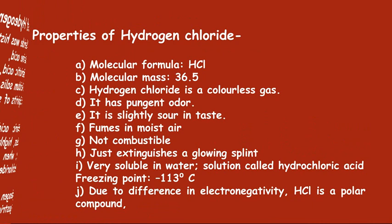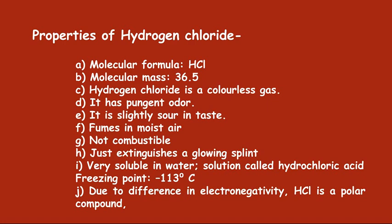Now we are moving forward to the properties of hydrogen chloride. The molecular formula of hydrogen chloride is HCl — that is, one atom of hydrogen and one atom of chlorine combine to form hydrogen chloride. The molecular mass of HCl is 36.5, so we can predict the vapor density of it, which would be 18.25 — just half of the molecular mass.